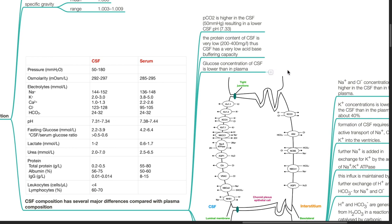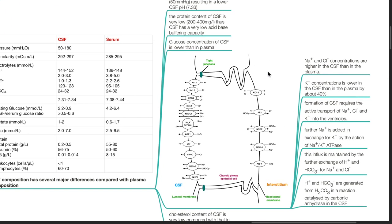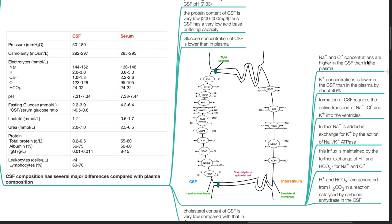Glucose concentration of CSF is lower than that in plasma. Sodium and chloride concentrations are higher in the CSF than in the plasma. Potassium concentration is lower in the CSF than in the plasma by about 40%.